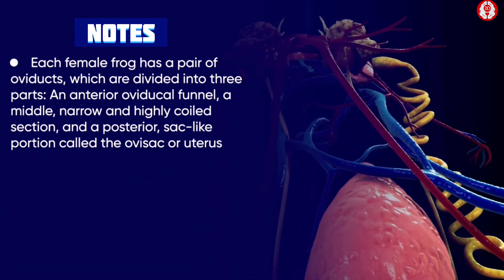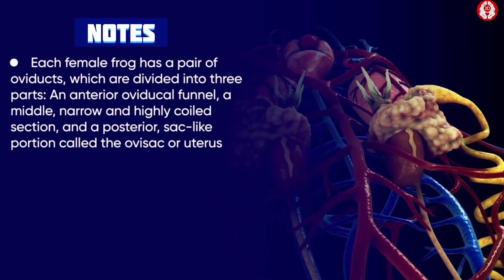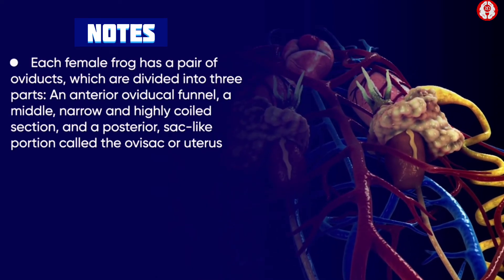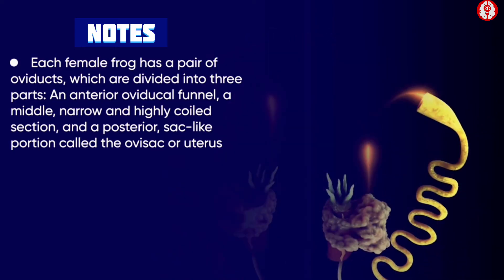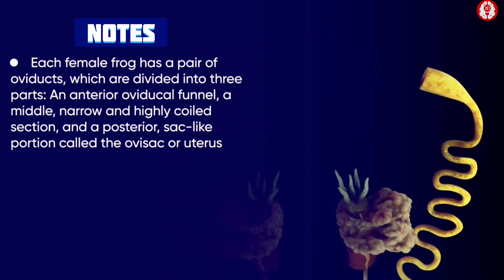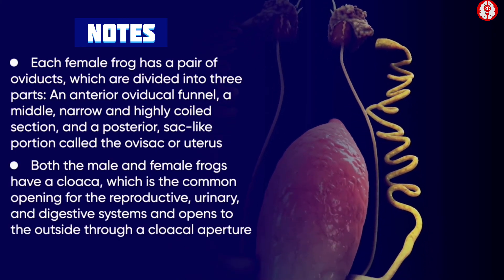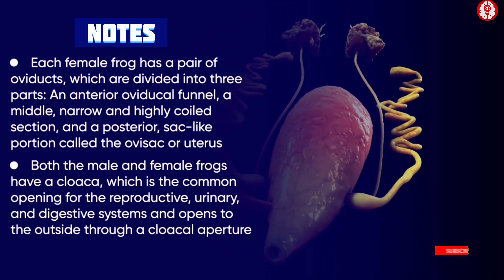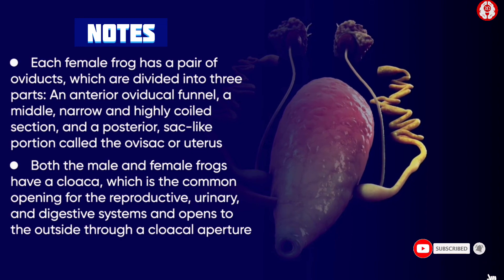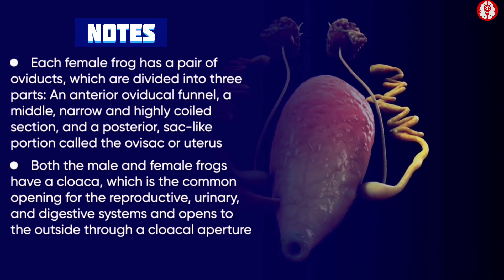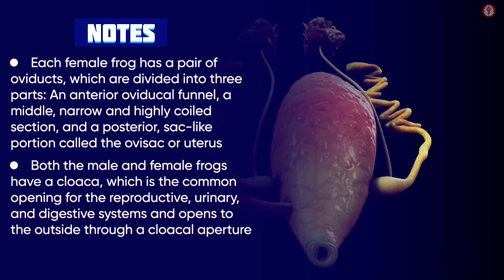Each female frog has a pair of oviducts divided into three parts: an anterior oviducal funnel, a middle narrow and highly coiled section, and a posterior sac-like portion called the ovisac or uterus. Both the male and female frogs have a cloaca, which is the common opening for the reproductive, urinary and digestive systems, and opens to the outside through a cloacal aperture.